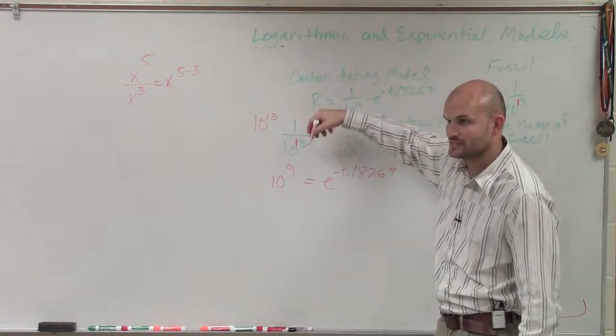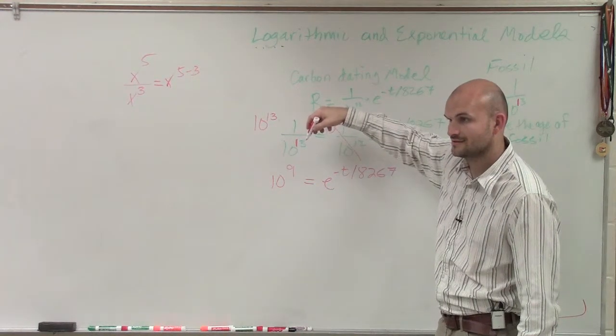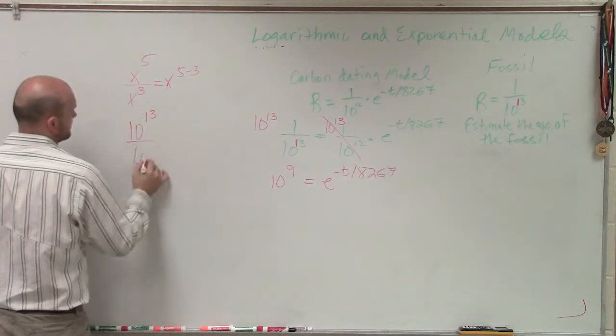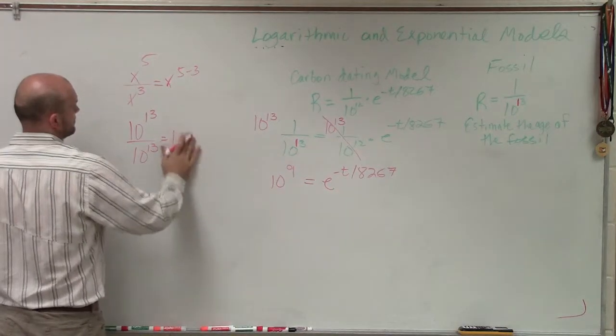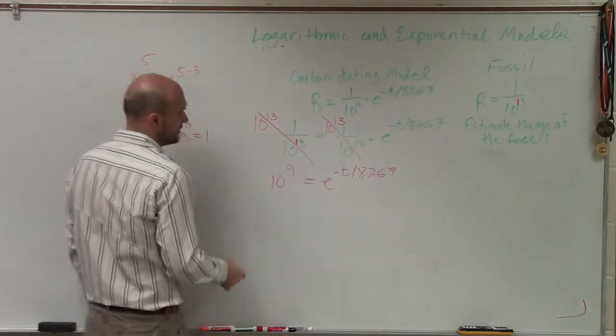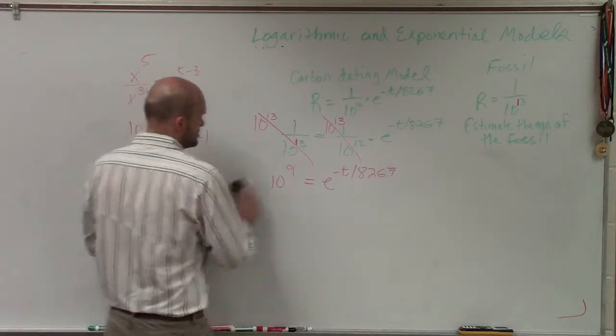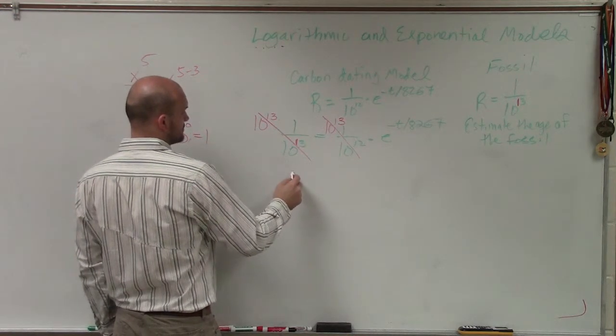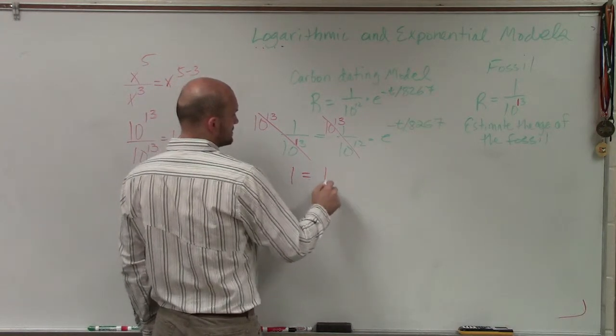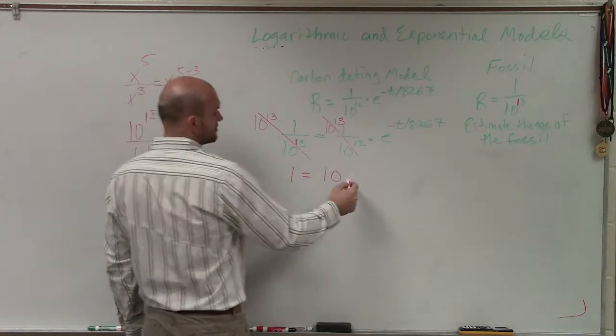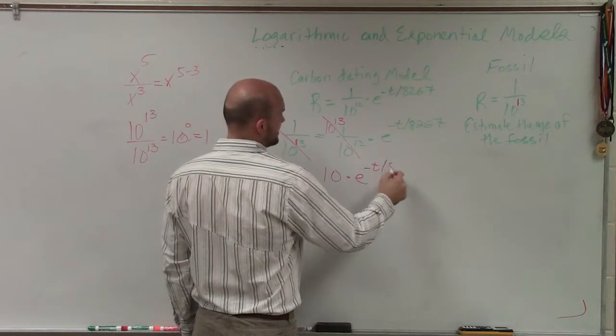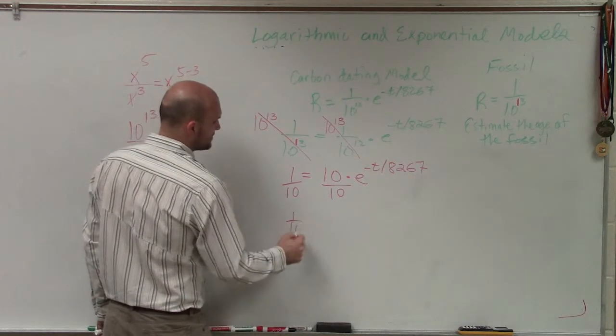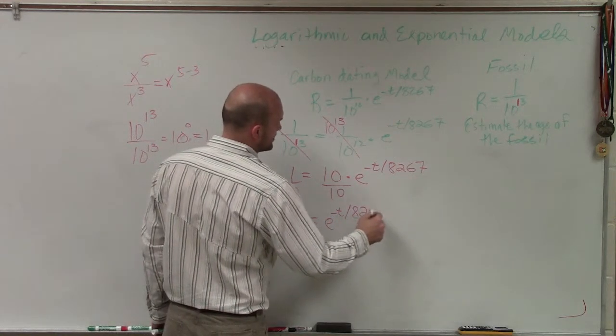Because what happens 10 to the 13th times 10 to the 13th is 1. So therefore, my apologies, we'll have, so in this case, we're going to have 1 equals 10, right? Times e to the negative t divided by 8,267. Then, to get rid of the 10, I'll divide by 10. So I have 1 10th equals e to the negative t divided by 8,267.